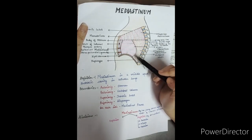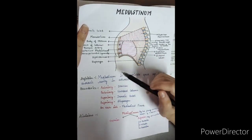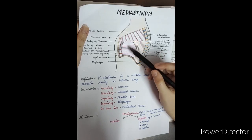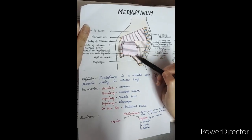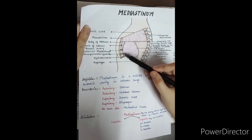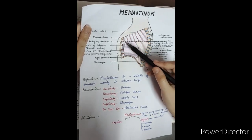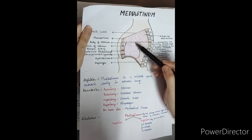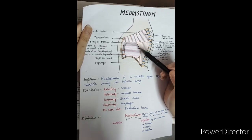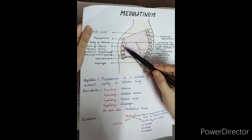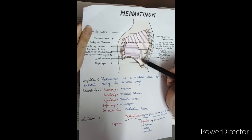Then we divide the inferior mediastinum into three parts. In the inferior mediastinum, the heart is present and the covering of the heart is called the pericardium. Pericardium divides the inferior mediastinum into three parts: anterior, middle, and posterior.